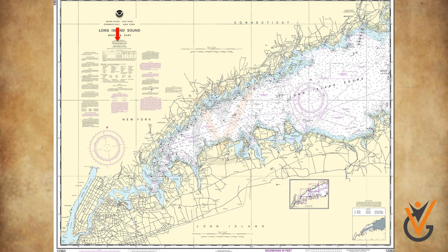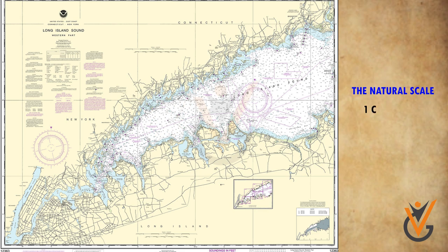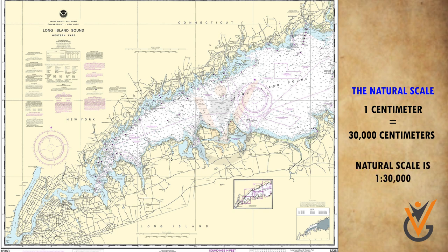The natural scale of a chart is found under the title of the chart. It is the ratio between a unit of length measured on the chart and a corresponding unit measured on the earth's surface. For example, when one centimeter on the chart equals 30,000 centimeters on the earth's surface, the natural scale is 1:30,000, which is printed on the chart under its title.